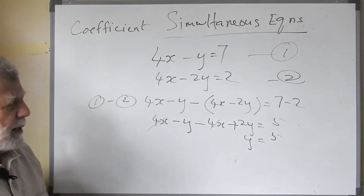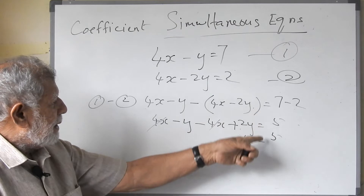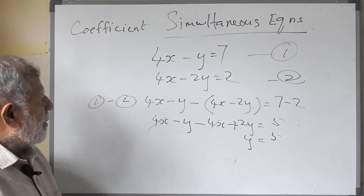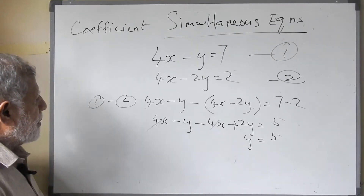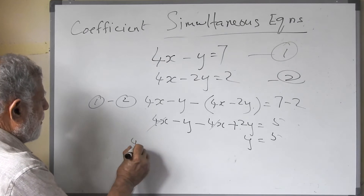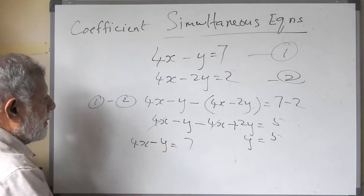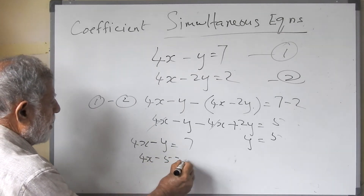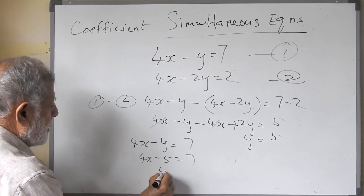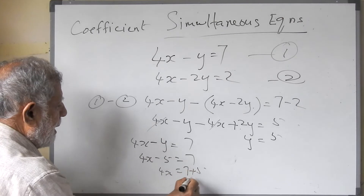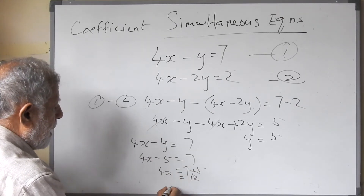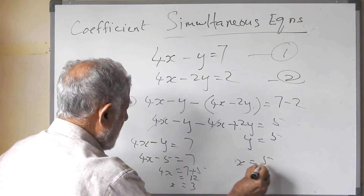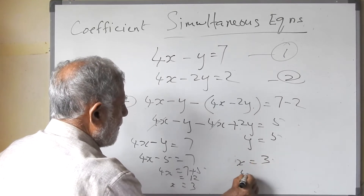So y is equal to 5. Now we have the value of y, so we substitute into the first equation: 4x minus y equals 7. Substituting y equals 5: 4x minus 5 equals 7, so 4x equals 7 plus 5, that is 12. Therefore x equals 3. So x equals 3 and y equals 5.